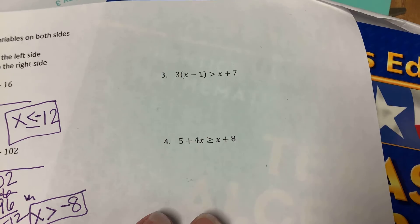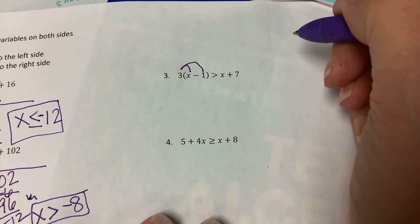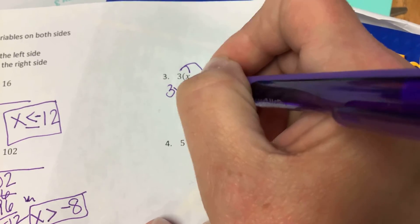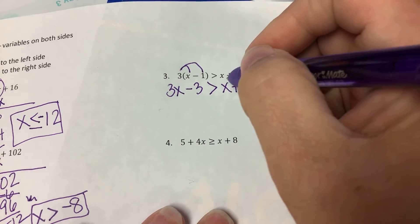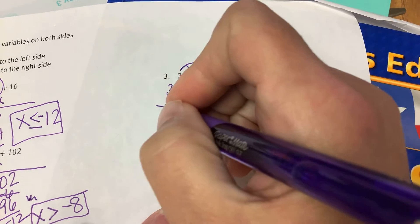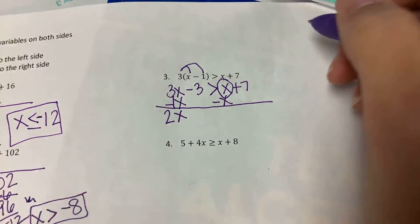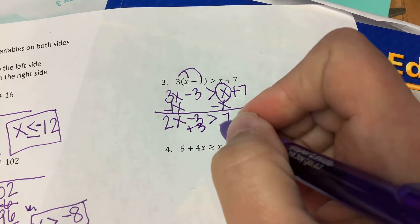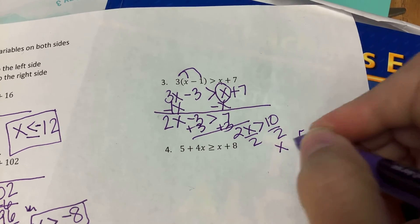Number 3 has an extra step that the other two problems didn't — that extra step is distributing the 3. So we take that 3 and distribute it: 3 times x is 3x, and 3 times negative 1 is negative 3, giving us 3x minus 3 greater than x plus 7. We subtract that x on the right — 3x minus x is 2x, because that x is like 1x. So 2x minus 3 is greater than 7. Then we add 3 to both sides: 2x is greater than 10. Divide by 2 and x is greater than 5.